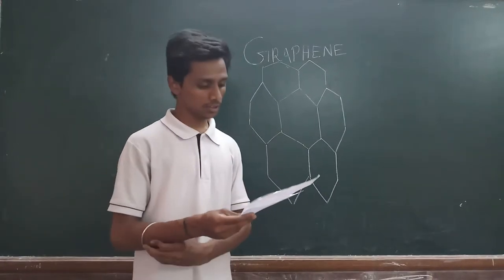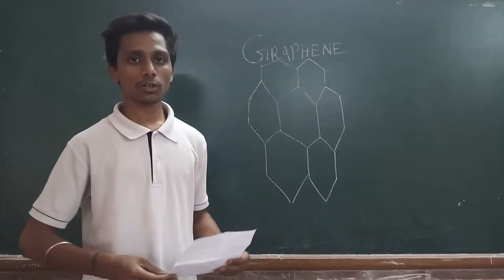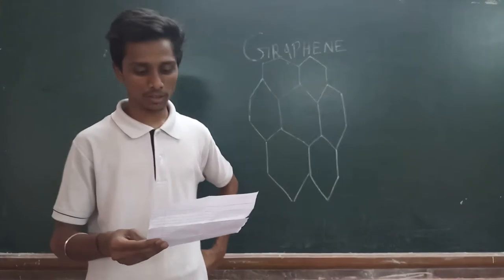It is the basic structural element of many other allotropes of carbon such as graphite, diamond, charcoal, carbon nanotubes, and fullerenes. Graphene has many uncommon properties.